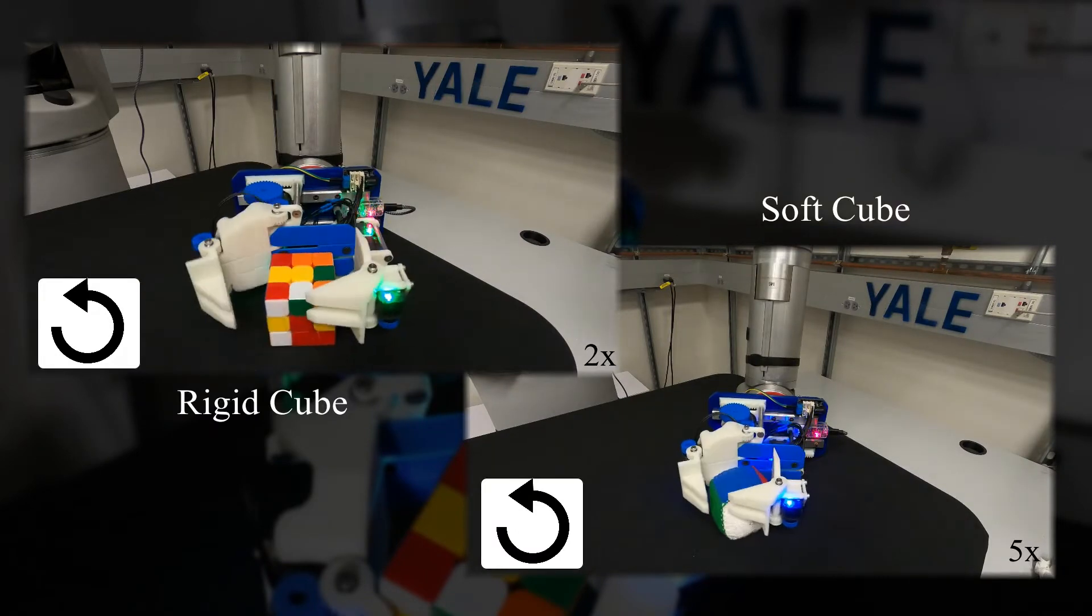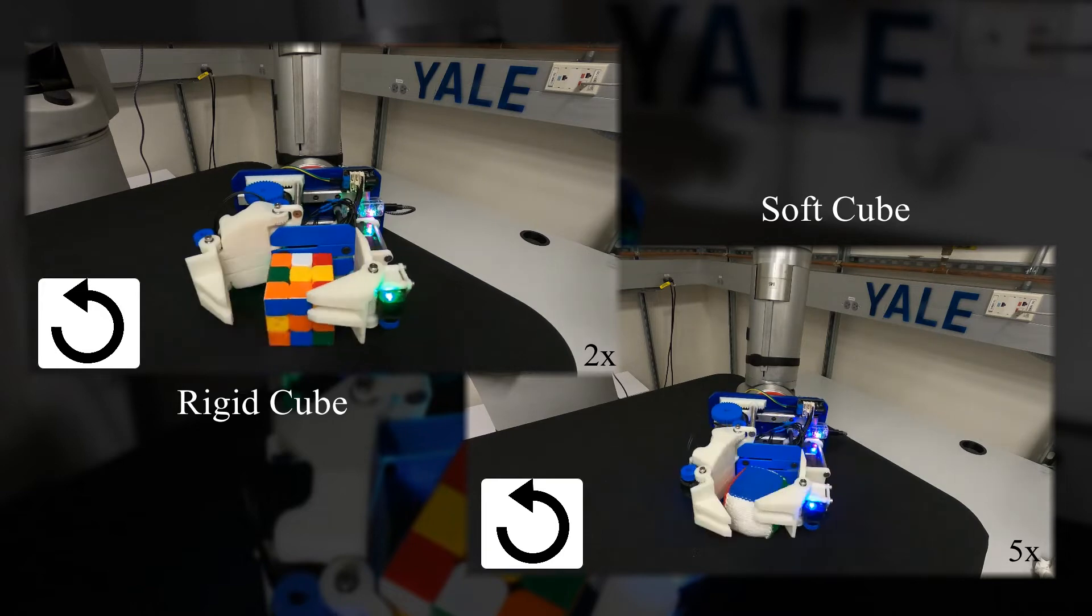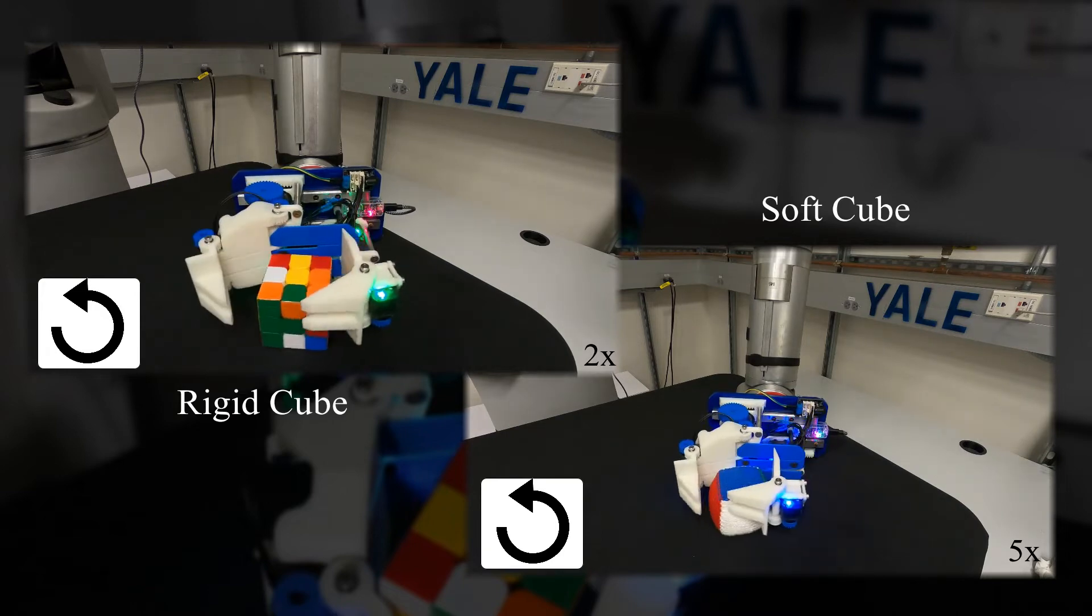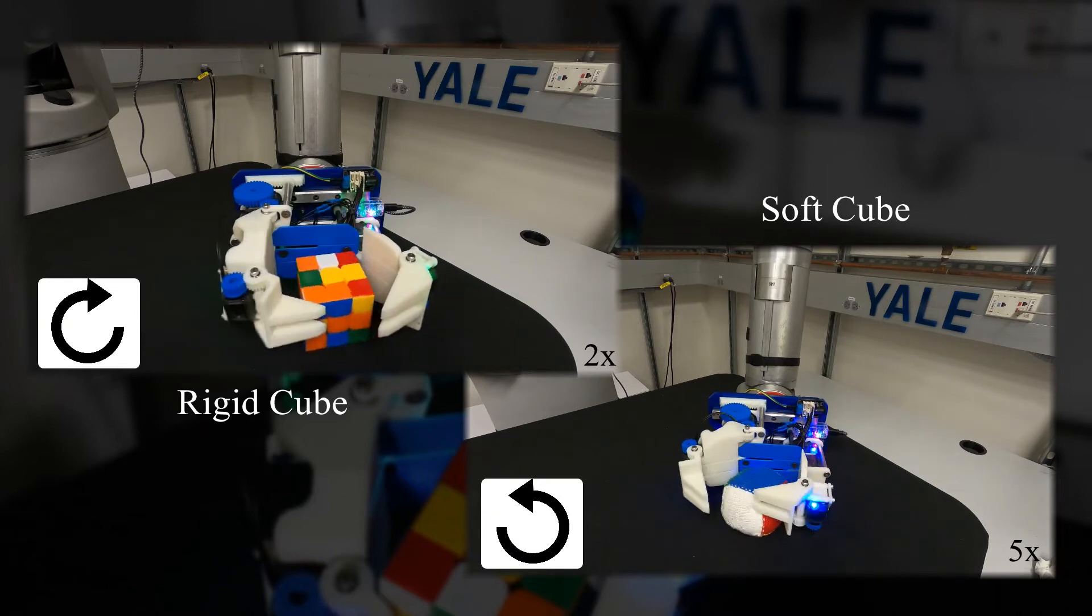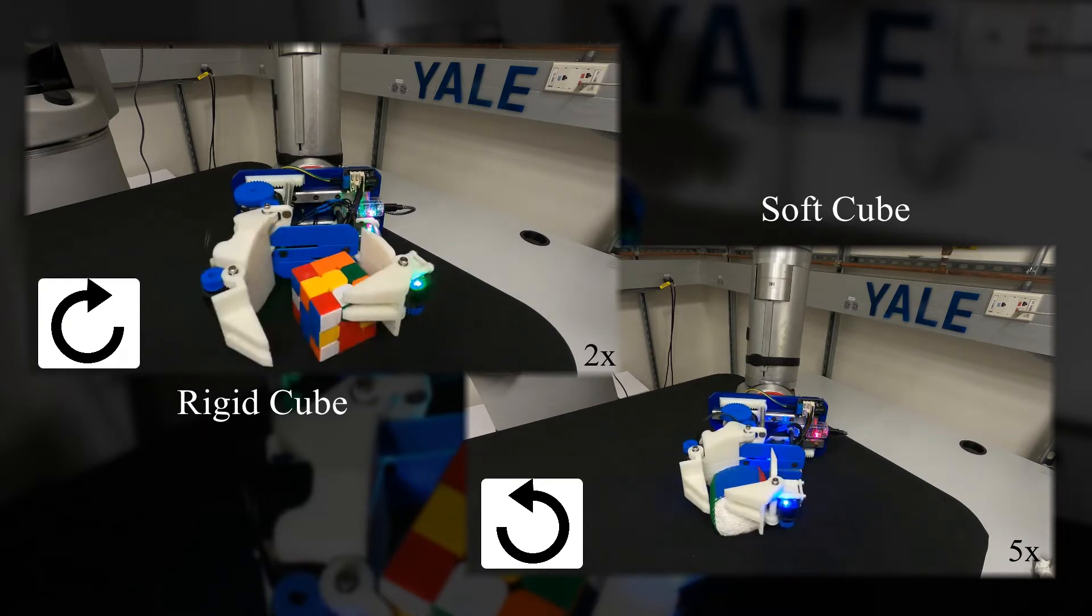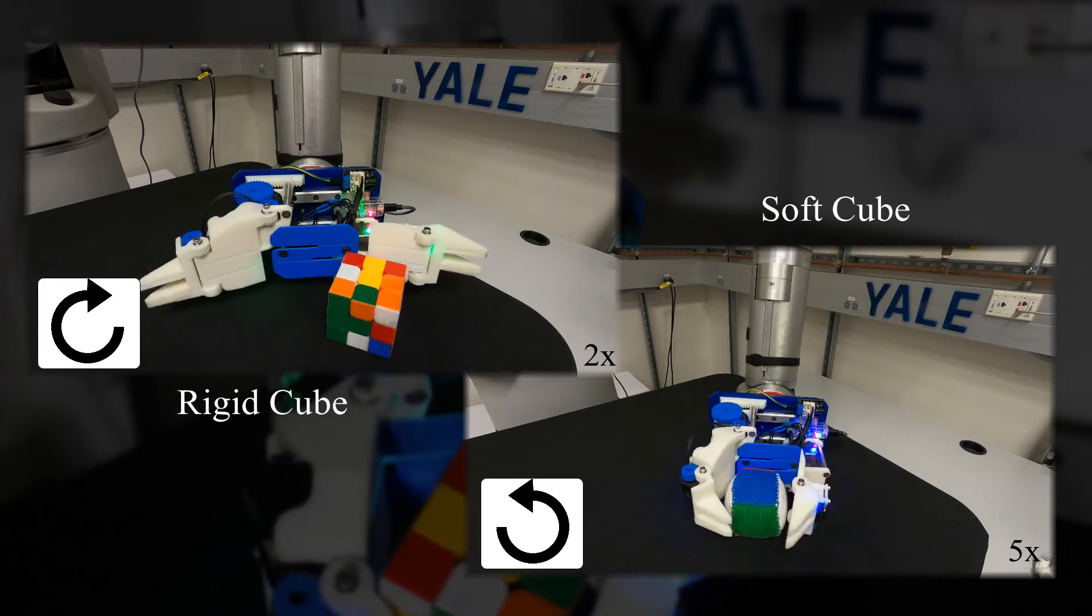The hand is shown manipulating two cubes, one rigid and one soft. The Rubik's cube comes from the YCB object and model set, and the soft cube is made and filled with a granular media. The hand successfully demonstrates continuous reorientation of both objects, though the soft cube takes longer to rotate due to deformation from the contact forces.